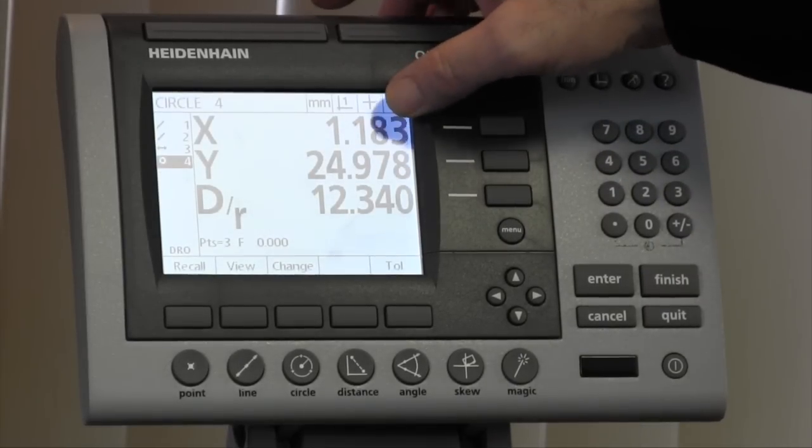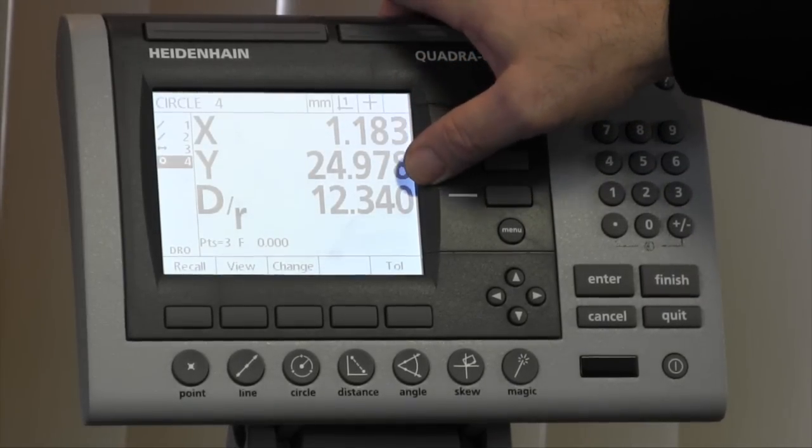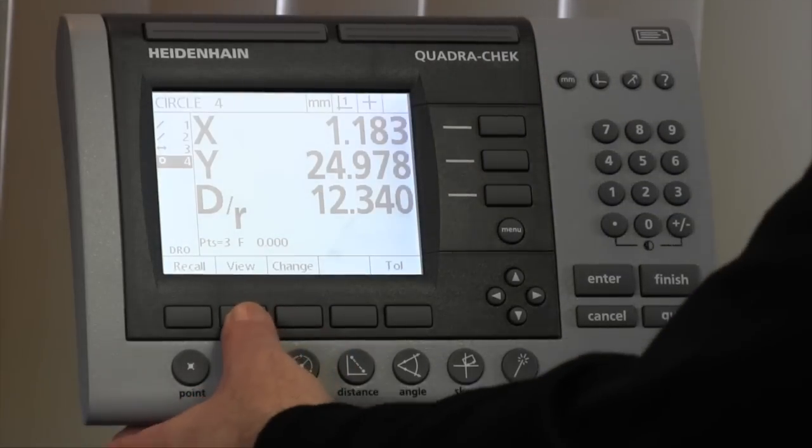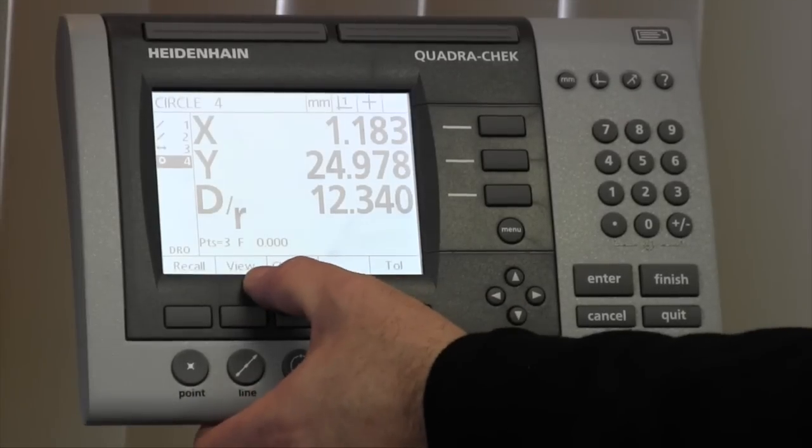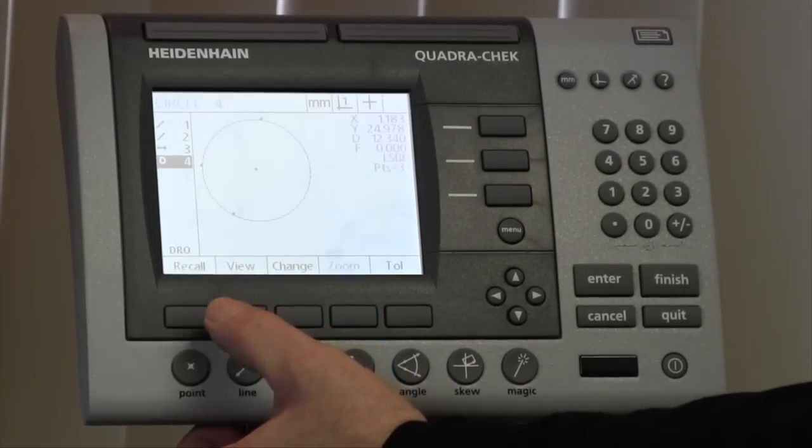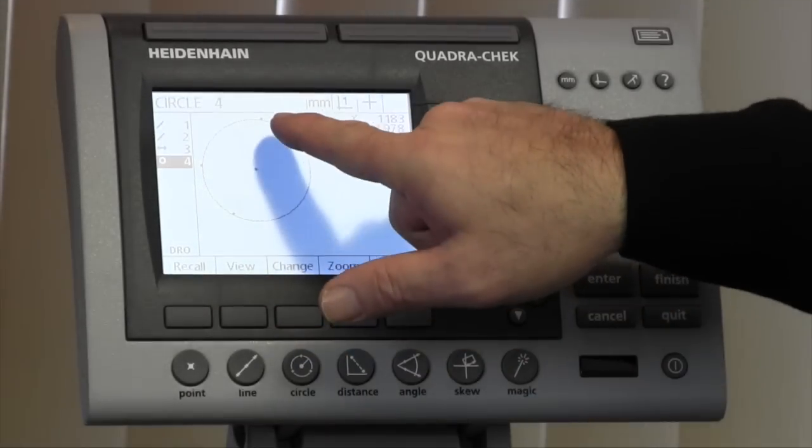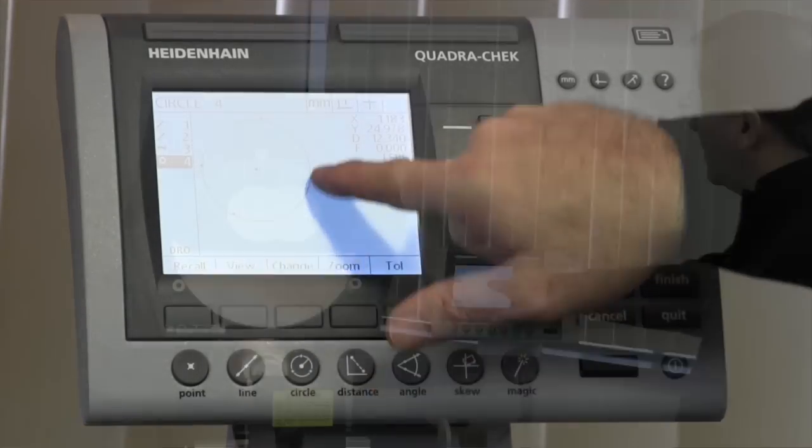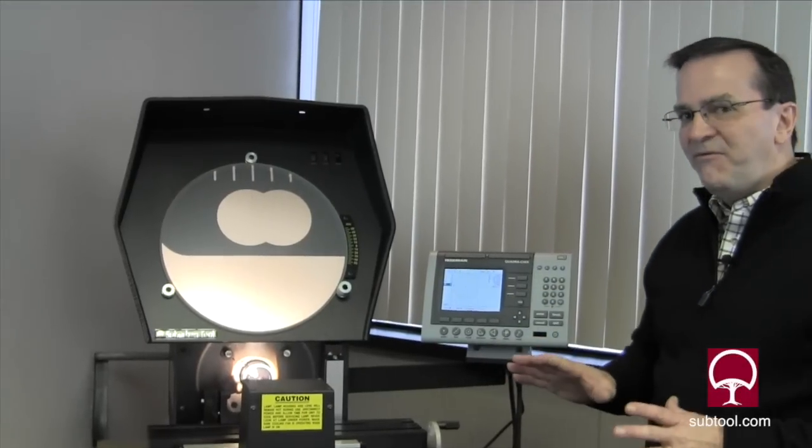There's our X center, there's our Y center, and there's our diameter. Now, when you measure something, this unit has a little button here says view. And that will actually show you the points that I selected in relation to the best fit.